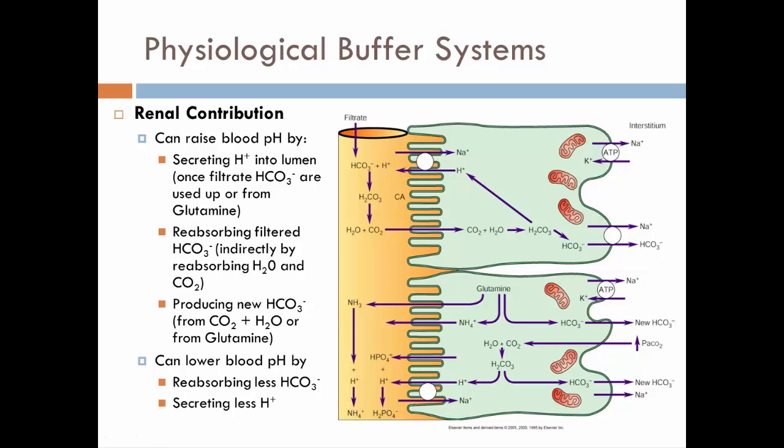Now I can also lower blood pH by simply reabsorbing less bicarbonates or secreting less hydrogen ions. So if I want to raise blood pH, I'm going to reabsorb more bicarbonates, secrete more hydrogens. If I want to lower blood pH, then I'm simply going to reabsorb less bicarbonates and secrete less hydrogen ions. That's how I can adjust the pH of the blood using the kidneys.